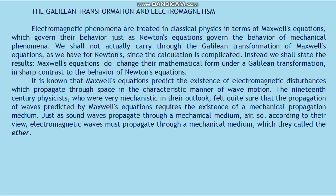The Galilean Transformation and Electromagnetism. Electromagnetic phenomena are treated in classical physics in terms of Maxwell's equations, which govern their behavior just as Newton's equations govern the behavior of mechanical phenomena. We shall not actually carry through the Galilean transformation of Maxwell's equations as we have for Newton's, since the calculation is complicated. Instead we shall state the results: Maxwell's equations do change their mathematical form under a Galilean transformation, in sharp contrast to the behavior of Newton's equations. It is known that Maxwell's equations predict the existence of electromagnetic disturbances which propagate through space in the characteristic manner of wave motion.